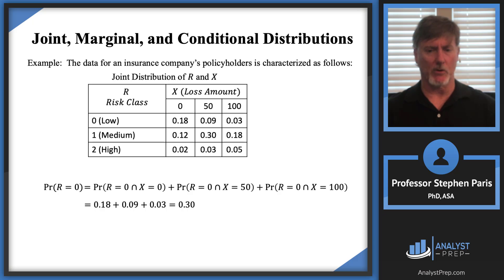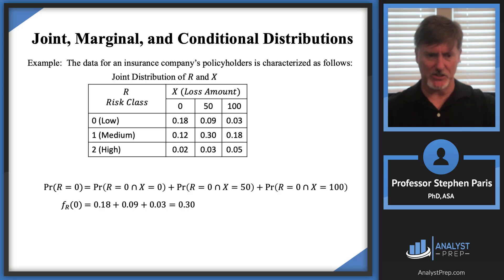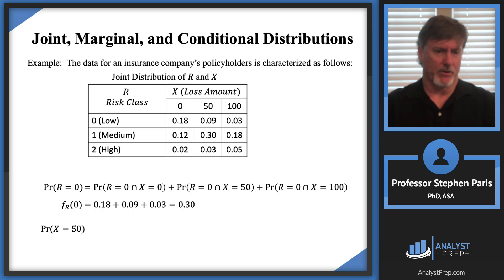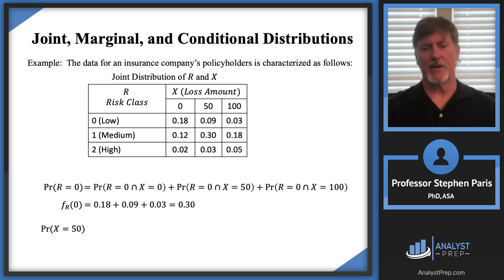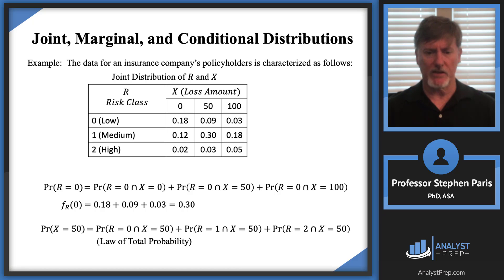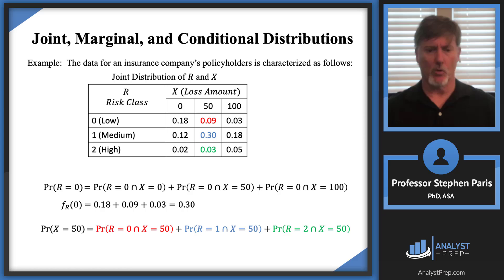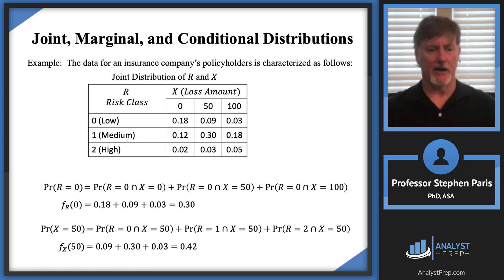The notation I'll use for this is F with a subscript of cap R evaluated at zero. Similarly, I could look at cap X and ask: what's the probability that cap X equals 50? Using the law of total probability, if someone had a loss amount of 50, they could be low, medium, or high risk. I add those three joint probabilities and get 0.42. The notation for this is F with a subscript of cap X evaluated at 50.